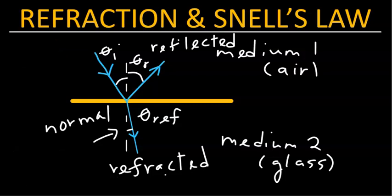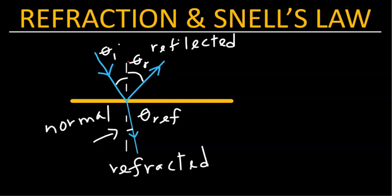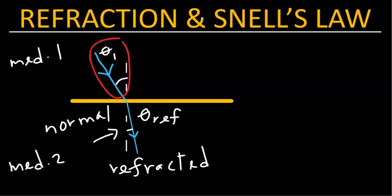We note that all these angles are measured with respect to this normal line, which makes 90 degrees with respect to the boundary. From now on, we shall ignore the reflected ray, although it will always be there, and concentrate only on the refracted ray. As you can see, as light travels from one medium to another, it tends to bend.